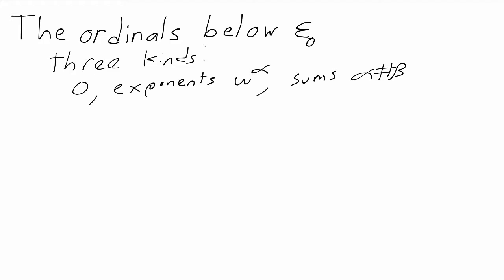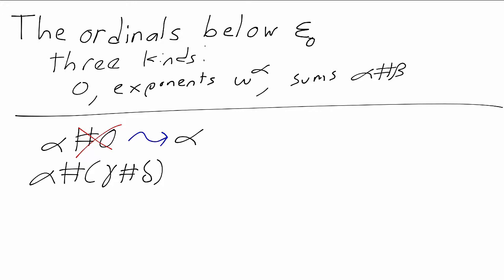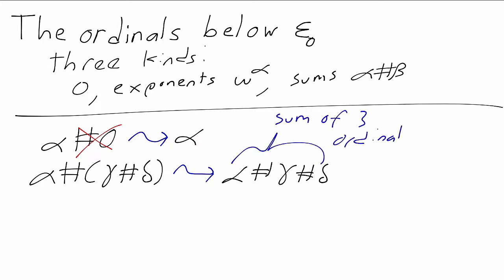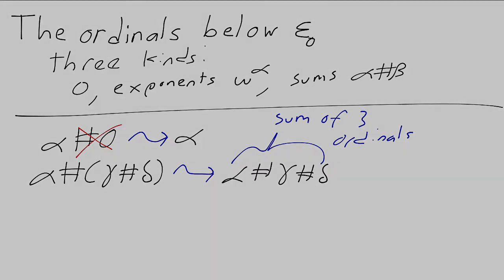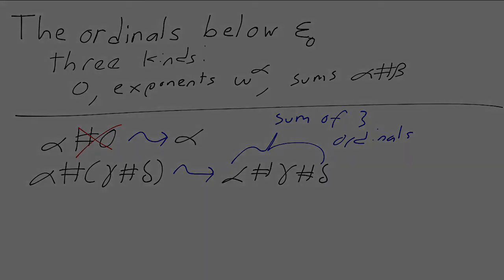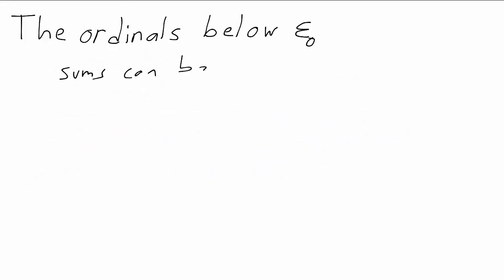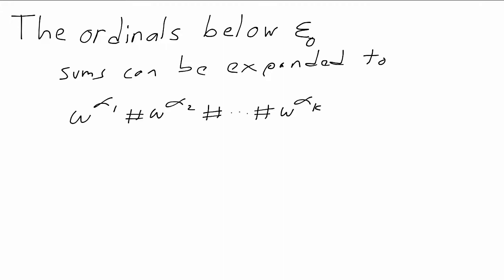When we look at a sum, if either part were zero, we would just drop it — alpha plus zero is the same ordinal as alpha. And if one of the parts is itself a sum, we could think of this ordinal as a sum of more than two parts. If beta is gamma plus delta, then alpha plus beta is also alpha plus gamma plus delta. So when we have a sum of ordinals, we can keep expanding it until it's a finite sum where none of the pieces is zero and none is a sum, which means each piece is an exponent.